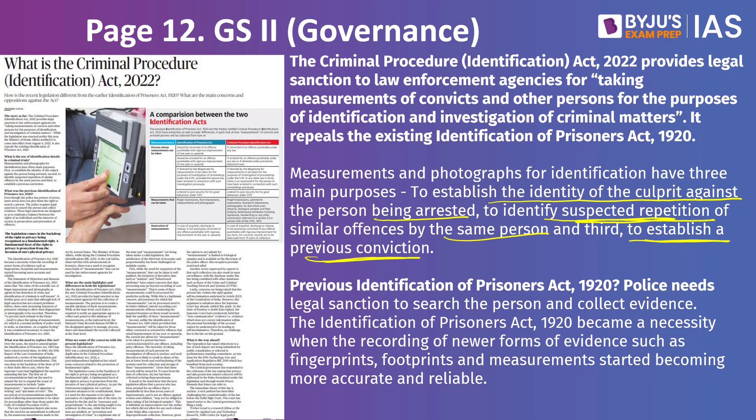The law says that if you commit a crime once, the punishment is lower, but if you repeat the same crime, the punishment is higher. The judge can check your fingerprints and these kinds of identifications to establish if you committed this crime earlier. That is why this record-keeping was required.